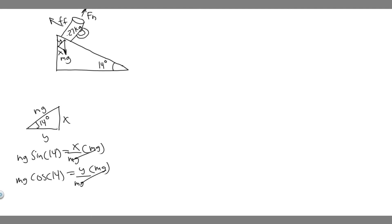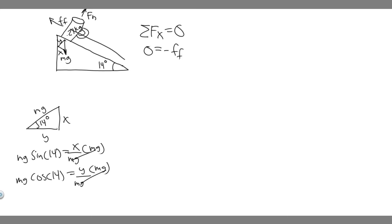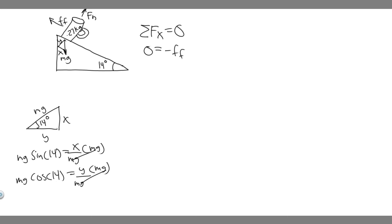Now we take the sum of the forces in the x direction, set equal to 0 because the object is at rest. Along the x-axis we have: friction acting to the left (negative) and the x component of gravity acting to the right (positive). So: 0 = −F_friction + mg·sin(14). Note: the x component is sine and the y component is cosine — I made a mistake earlier.